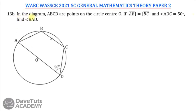In this question on circle theorems, we are told that in the diagram, ABCD is a point on the circle with center O. The length of AB and BC are equal, and angle ADC is 50 degrees.